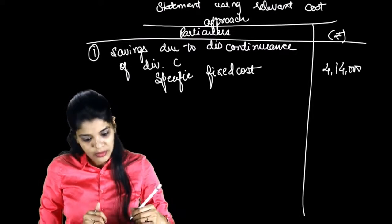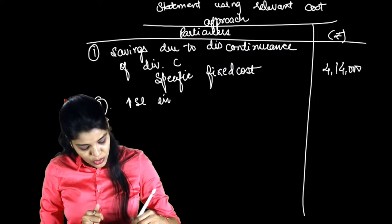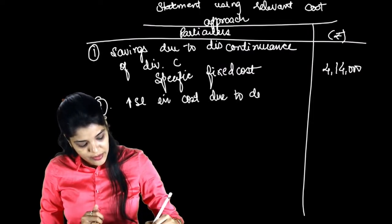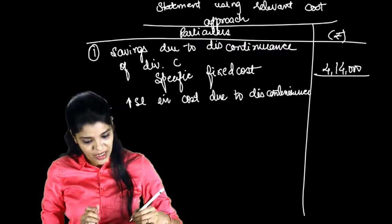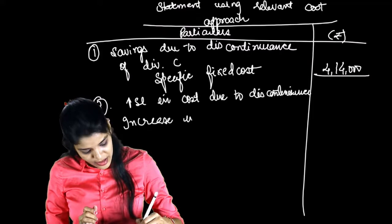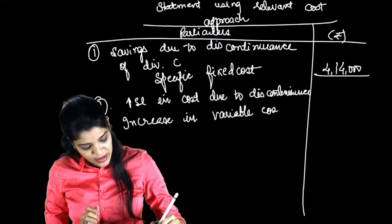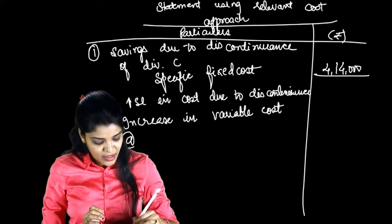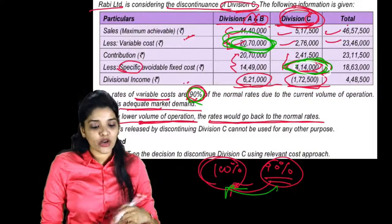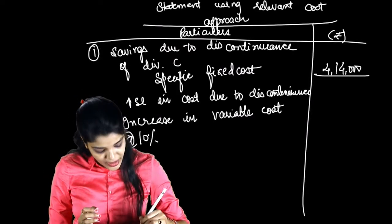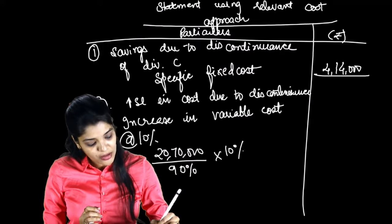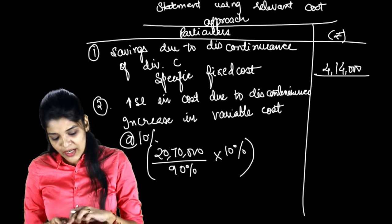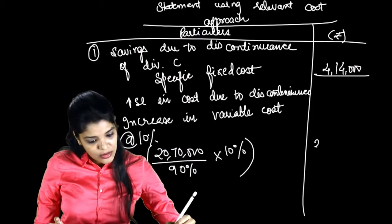Increase in cost due to discontinuance. The first one was saving in cost, now increase in cost - increase in variable cost. How much increase? 10% increase in variable cost at the rate 10%. The current variable cost is 90%, which is 20,70,000. This 20,70,000 is 90%. So 10% will be 20,70,000 divided by 90%, into 10%, which is 2,30,000.